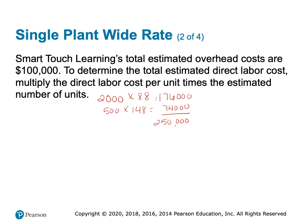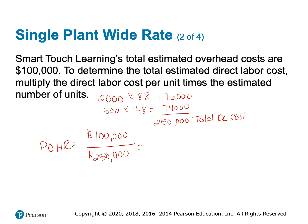To compute the single traditional plant-wide predetermined overhead rate, our numerator is estimated total overhead of $100,000, and our denominator is estimated total direct labor cost of $250,000. Dividing those gives us a predetermined overhead rate of 0.40, or 40%. You need to be working these problems out with me — grab your calculator.